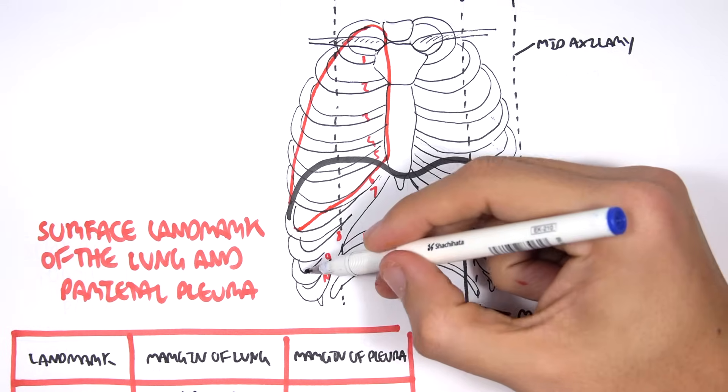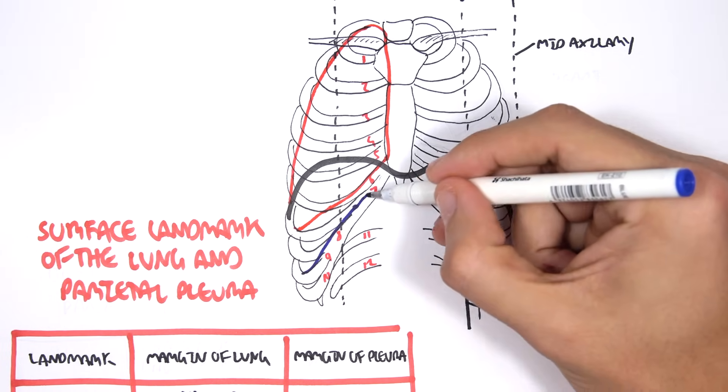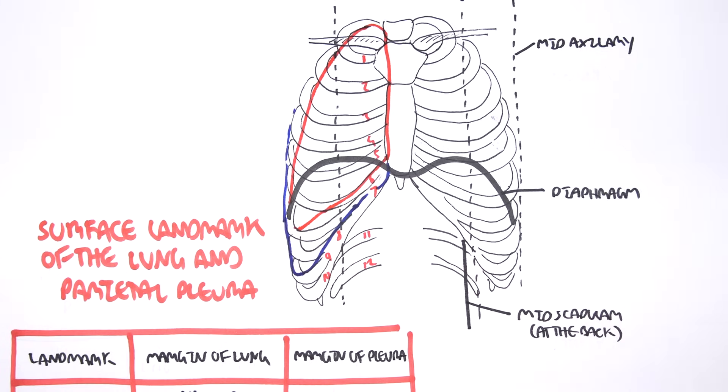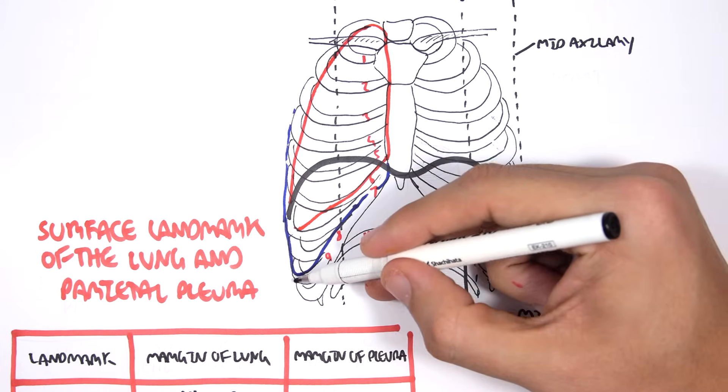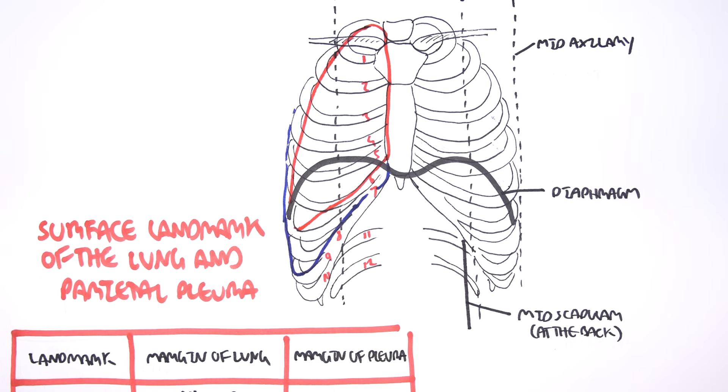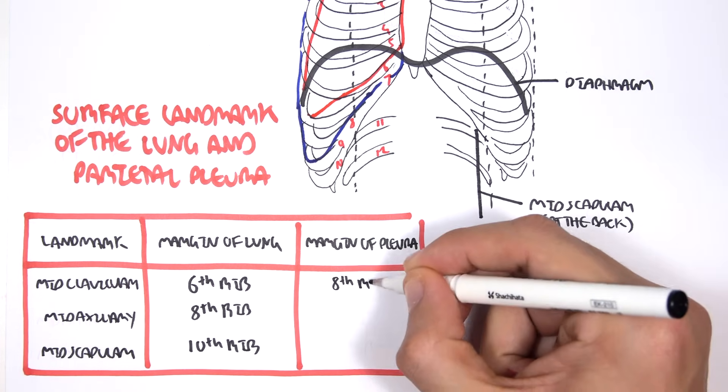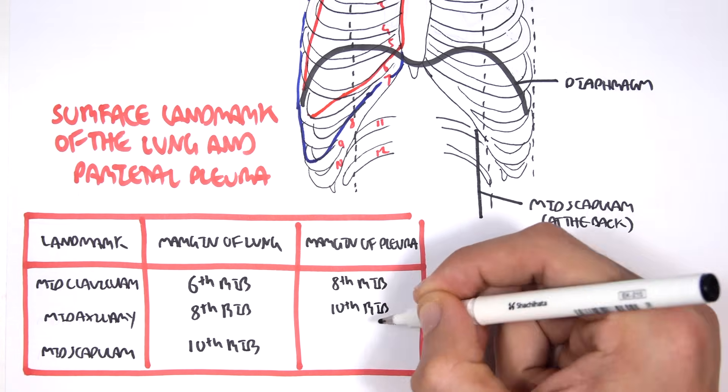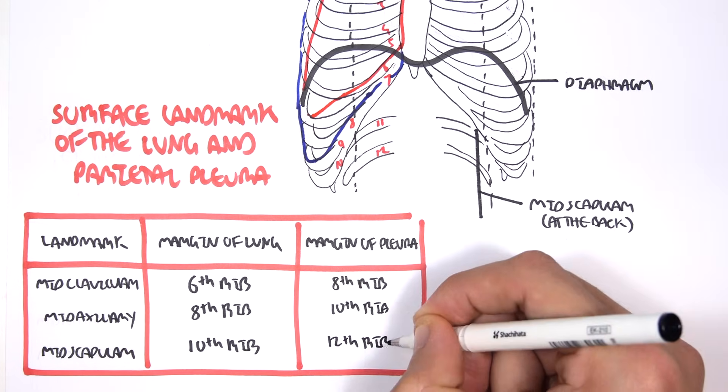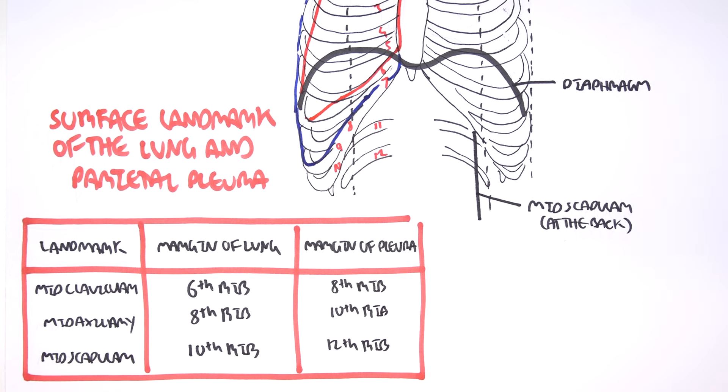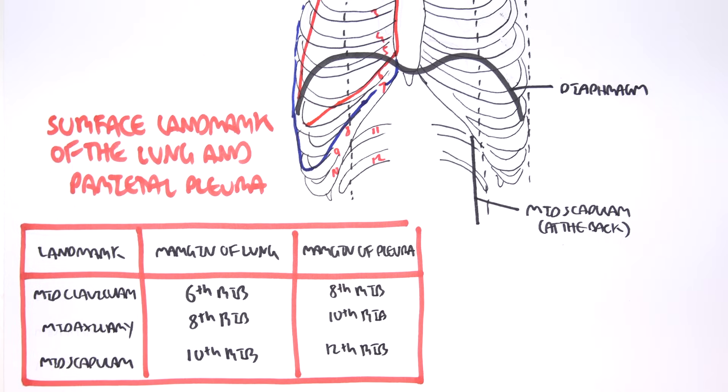The pleura here in blue goes further down. You essentially add two to find the margins of the pleura. So mid axillary, it's at rib ten, mid clavicular, it's rib eight. So margin of the pleura, mid clavicular, plus two is eight. Mid axillary is ten, and mid scapula is twelve. I hope that makes sense.